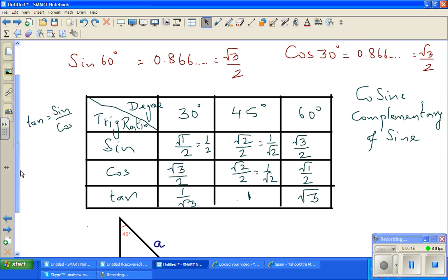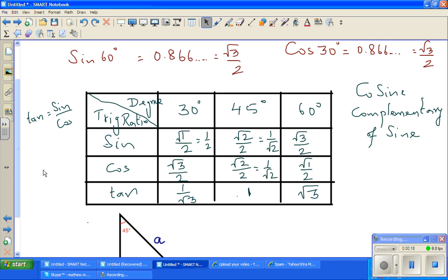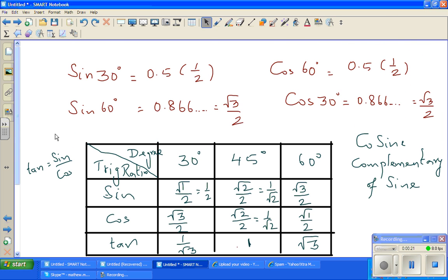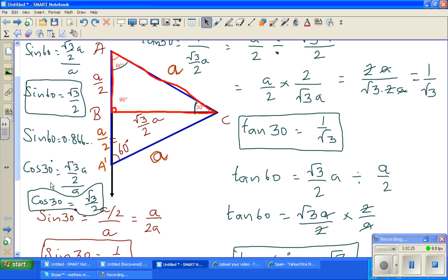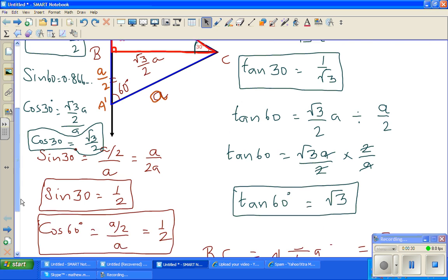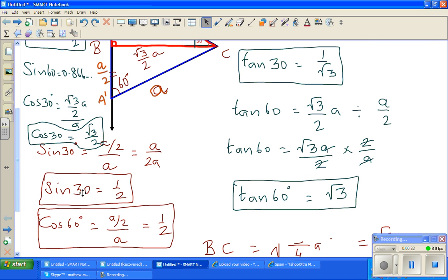Okay, so this is where we finished. We proved that sine 30 is half. So sine 30 is half. When we say that cos 60 is also half, they're complementary. 30 and 60 are complementary.